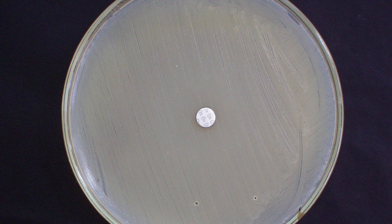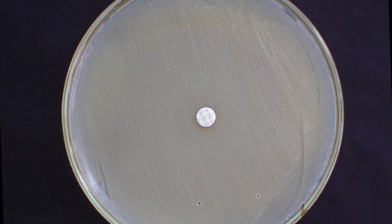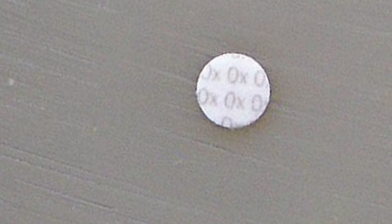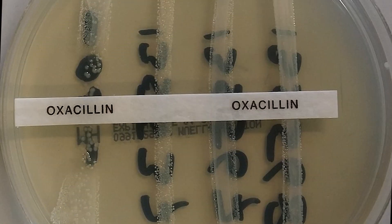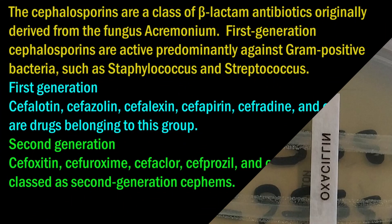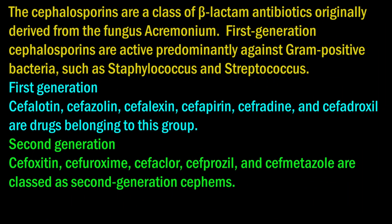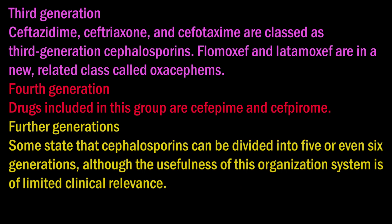MRSA — methicillin-resistant Staphylococcus aureus — is any strain of Staphylococcus aureus that has developed through natural selection or acquired through horizontal gene transfer a multiple drug resistance to beta-lactam antibiotics. Beta-lactam antibiotics are a broad-spectrum group that includes penicillin derivatives such as methicillin and oxacillin, and cephalams such as cephalosporins.